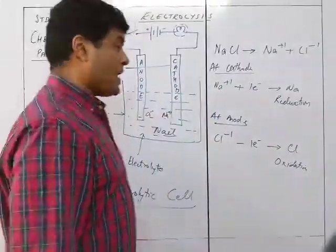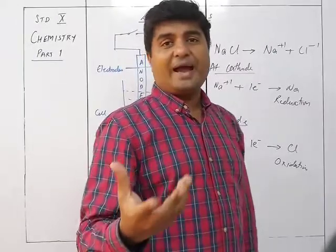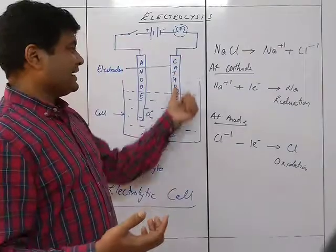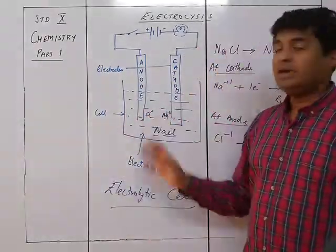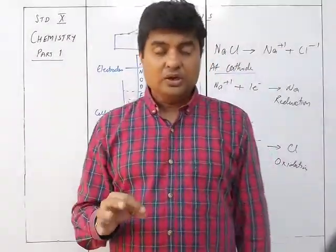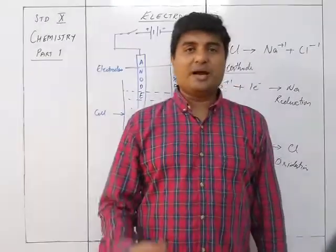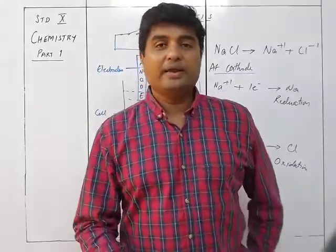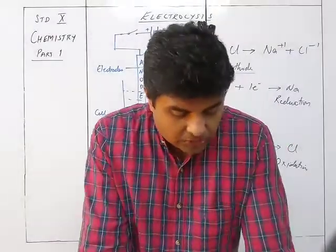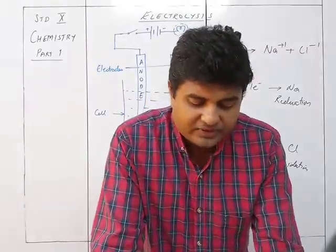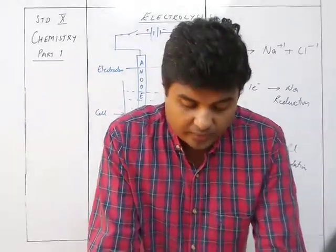Graphite carbon electrodes are used when the product formed during electrolysis would react with metallic electrodes. Graphite is a unique non-metal which is able to conduct electricity. So if the element produced at an electrode would react with metal, then graphite carbon is used instead. They are connected to the battery and switch, and classified as anode or cathode depending on the connection.